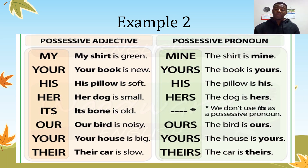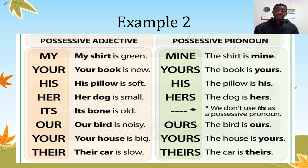Now let's look at the second example, between possessive adjective and possessive pronoun. My shirt is green — the shirt is mine. Your book is new — the book is yours. Its pillow is soft — the pillow is his.